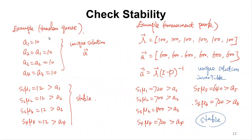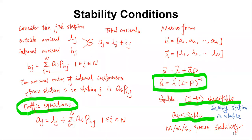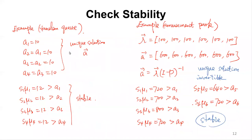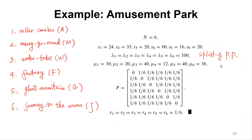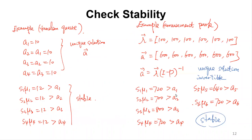Let's check the stability condition. The arrival rate a is the total rate from internal and external sources — this gives a unique solution. The service rate S_I times mu_I equals 12 for all stations, and it is clearly greater than a_I. So all stations satisfy the stability condition and the system is stable with a unique solution.